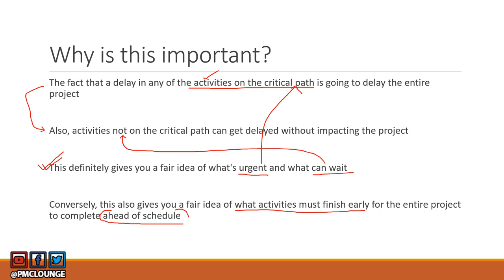If your project is a two-year-long engagement and you want to finish it in 20 months, you need to find the critical path and see how you can reduce the duration of those critical path activities. If the duration of activities on the critical path is reduced, the entire project can be completed ahead of schedule.